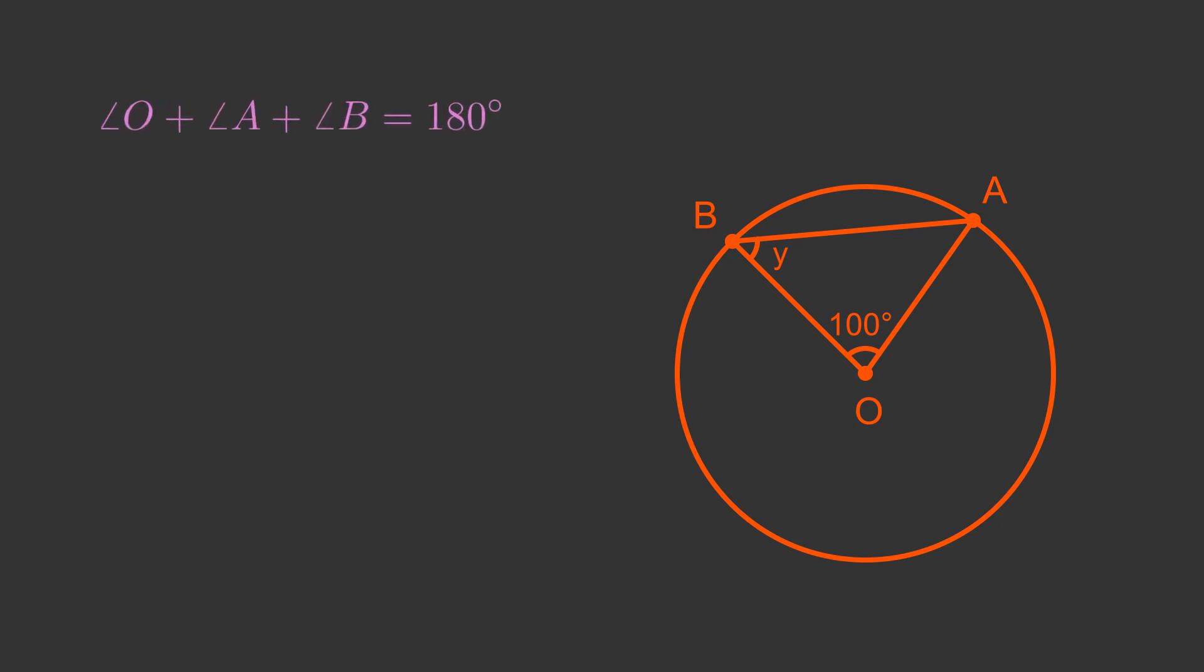We know that the three angles of a triangle add up to 180 degrees, so O plus A plus B equals 180. Since it is an isosceles triangle, we also know that A and B are equal, and are both equal to Y. And we have been told that the angle O is 100 degrees.